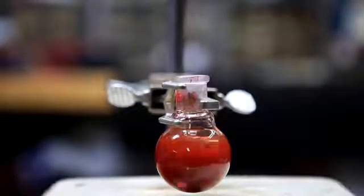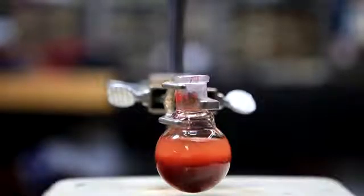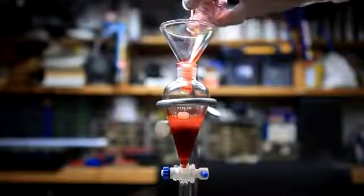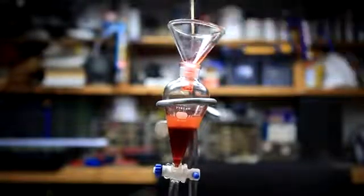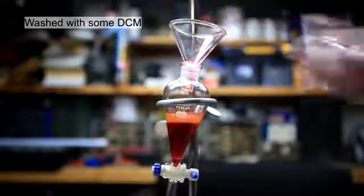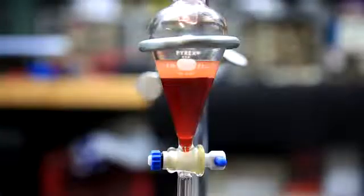When the stirring stopped, it quickly reverted to a two-phase mixture. This mixture was then transferred to a small separatory funnel. The round bottom flask was washed with a couple milliliters of DCM. The contents were mixed thoroughly and then the layers were allowed to separate.